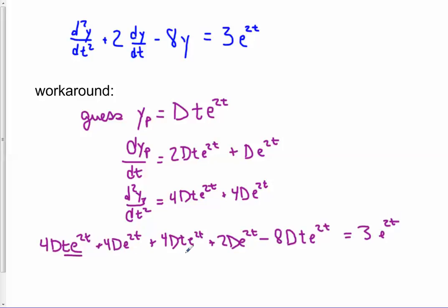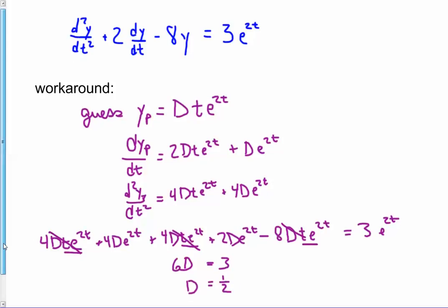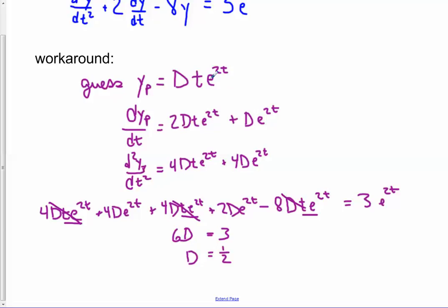And you'll notice that the t e to the 2t terms, there are three of them, we got 4 plus 4 minus 8. So they exactly cancel. And the plain e to the 2t parts do not cancel this time. So we have 6d e to the 2t equals 3 e to the 2t. So 6d has to equal 3. And so d would be 1 half. So it worked. This guessing this solution will work if d equals 1 half.